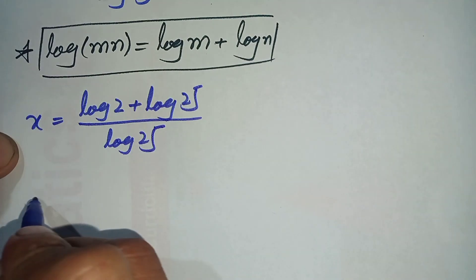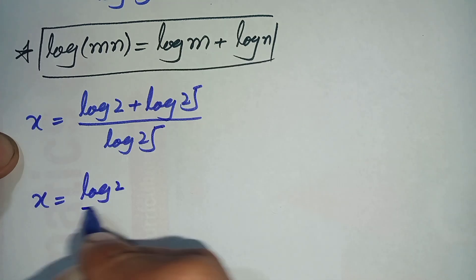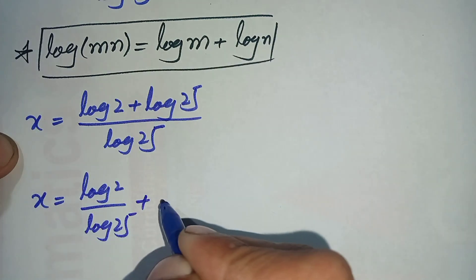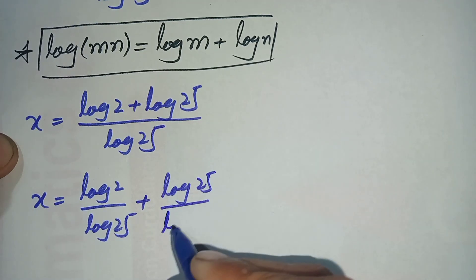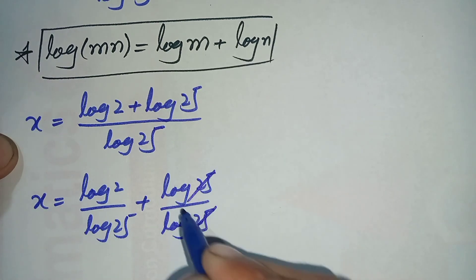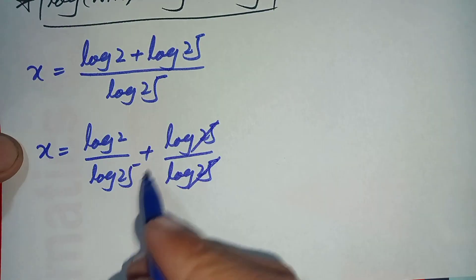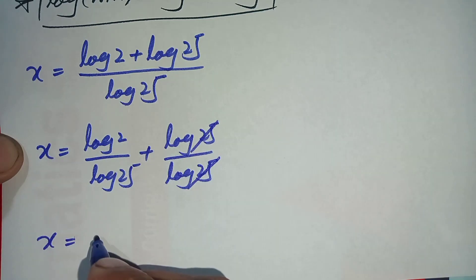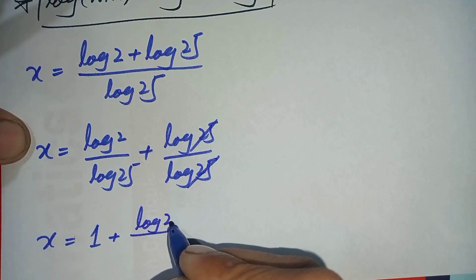We can split the right-hand side as: x is equal to log of 2 divided by log of 25, plus log of 25 divided by log of 25. Here log(25) over log(25) cancels to give 1, so we can write x is equal to 1 plus log of 2 divided by log of 25.